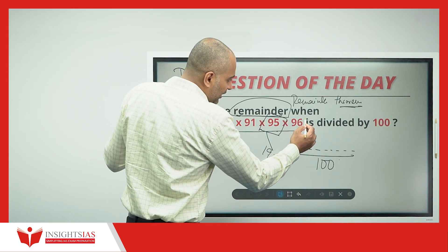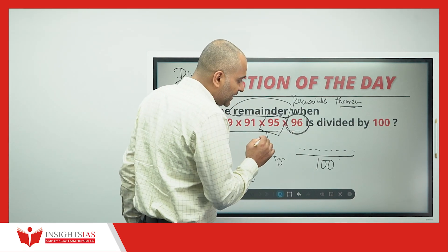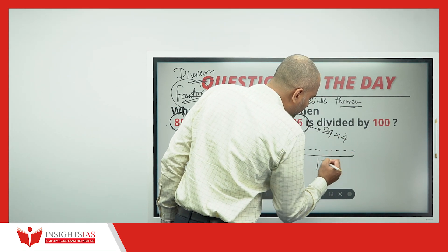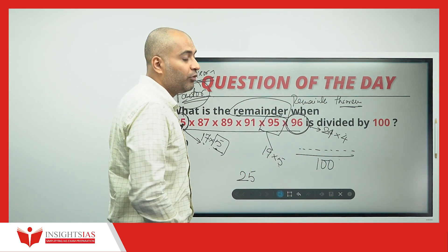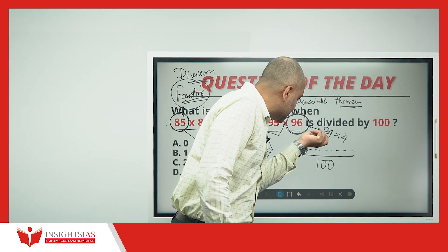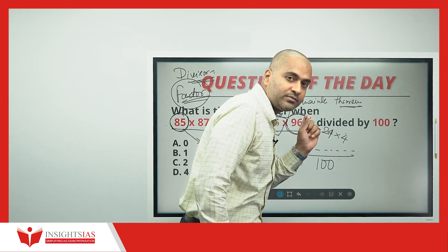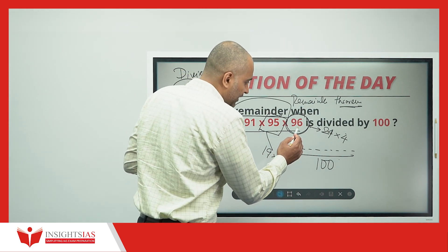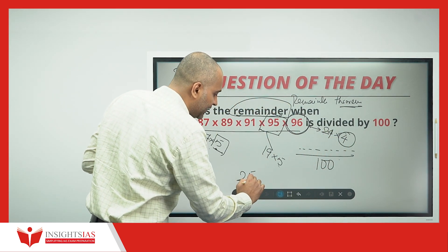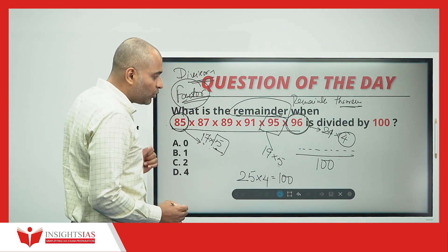Let us go further. Now, 96 here. This 96 can be split in this way: 24 × 4. This 96 is divisible by 24 as well as 4. So I can say the factors of 96 are 24 and 4. I will take 4. When I multiply here, this becomes 100 — 5 × 5 × 4 = 100.